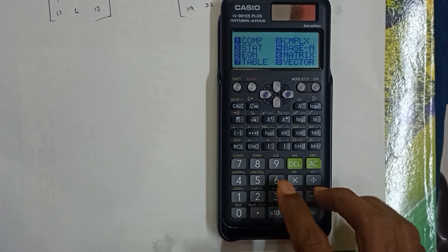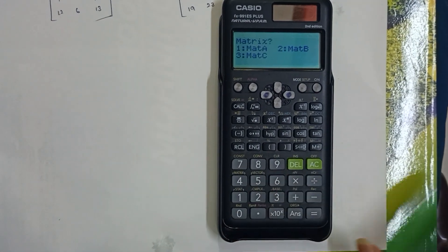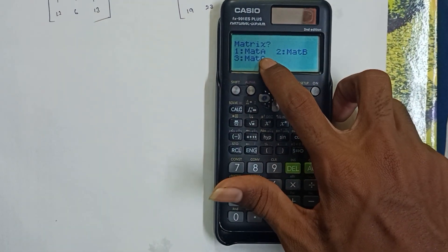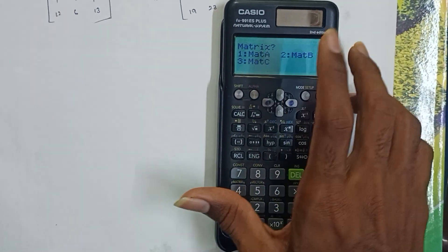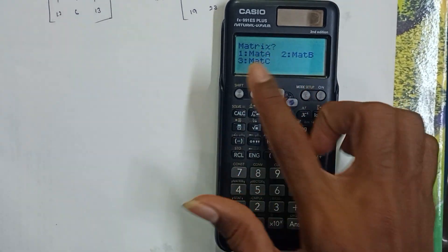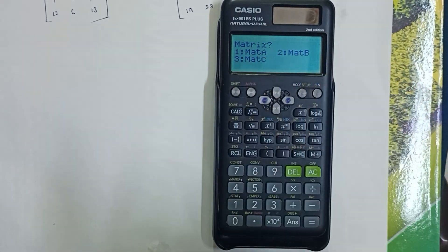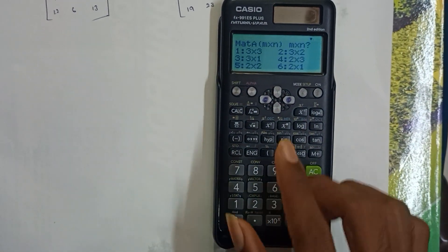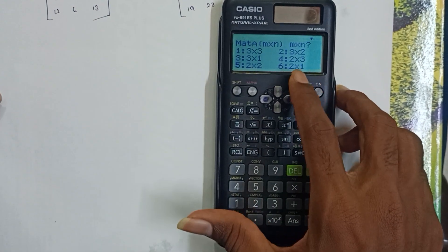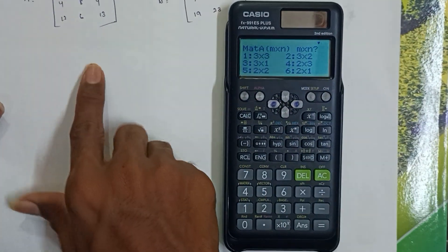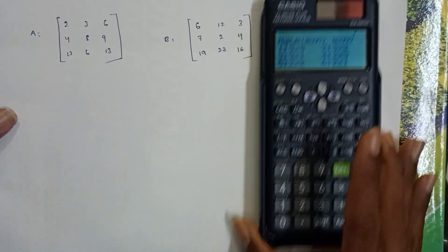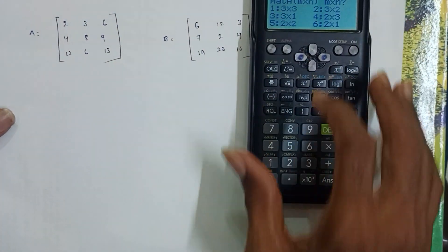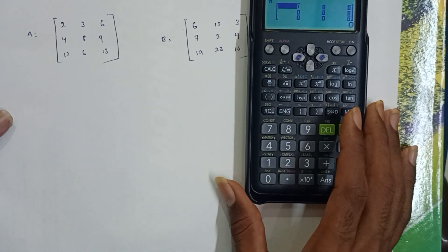We have Matrix A, Matrix B, and Matrix C - options 1, 2, and 3. First, I'll save Matrix A, so I'll press 1. Matrix A will be a 3 by 3 matrix.